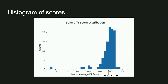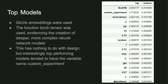This is the histogram of submission scores. The baseline is right around 0.67, and as you can see, all people were able to surpass the baseline, which is really good. We're going to look at the VSM results for top performing models and the less significant ones.